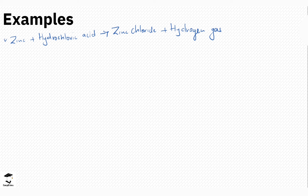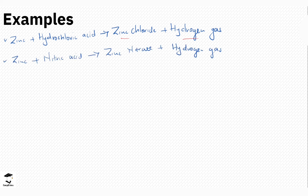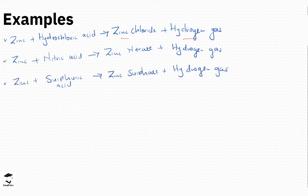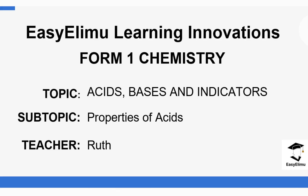Using zinc metal as another example across all the acids: zinc reacts with hydrochloric acid to form zinc chloride and hydrogen gas; zinc reacts with nitric acid to form zinc nitrate and hydrogen gas; zinc reacts with sulfuric acid to form zinc sulfate and hydrogen gas; and zinc reacts with carbonic acid to form zinc carbonate and hydrogen gas. You can see the salt is always derived from the acid used.